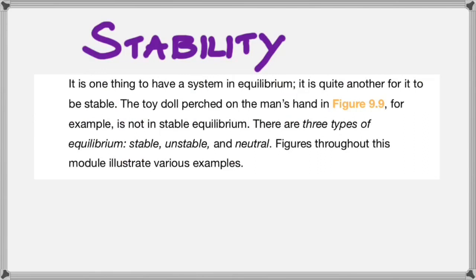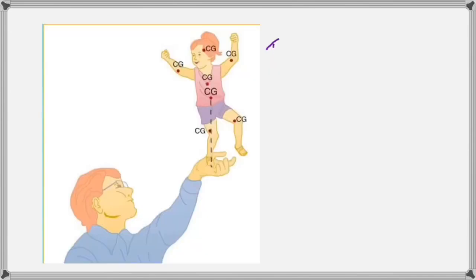The second part of this chapter focuses on stability. When focusing on stability, there are three types of equilibrium: stable, unstable, and neutral equilibrium.